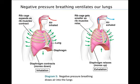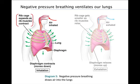Breathing is the alternate inhalation of air. This ventilation of our lungs maintains high oxygen and low carbon dioxide concentrations at the respiratory surface. Diagram 5 shows the changes that occur in our ribcage, chest cavity, and lungs during breathing. During inhalation, the ribcage expands as muscles between the ribs contract. At the same time, the diaphragm contracts, moving downward and expanding the chest cavity. The volume of the lungs increases, which lowers the air pressure in the alveoli to less than atmospheric pressure. Flowing from a region of higher pressure to one of lower pressure, air rushes through the nostrils and down the breathing tubes to the alveoli. This type of ventilation is called negative pressure breathing.